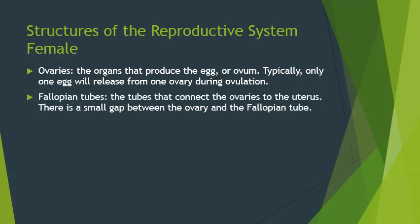The fallopian tubes are the egg's pathway from the ovaries to the uterus, though the fallopian tubes are not actually connected to the ovaries. Instead, at ovulation, the finger-like structures at the end of the tube sweep over the ovary and help propel the egg into the tube.